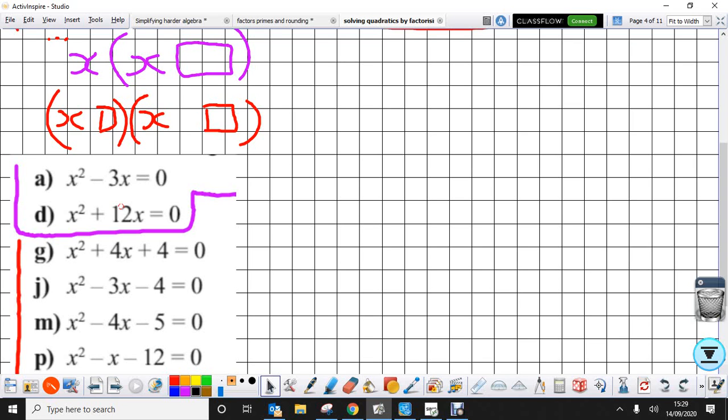Okay, so we're going to look at factorising quadratics in two different forms. Initially, if it's in the form of the purple, which is x squared minus 3x equals 0, or x squared plus 12x equals 0...